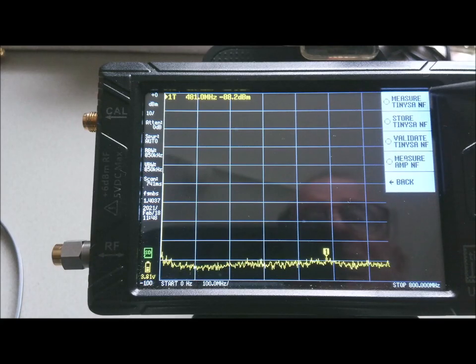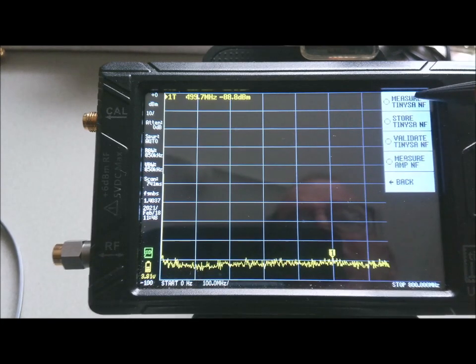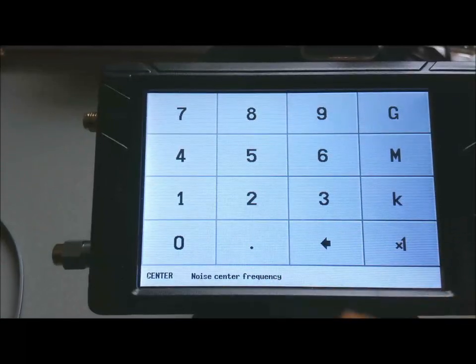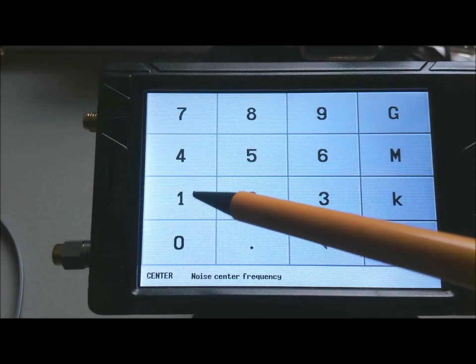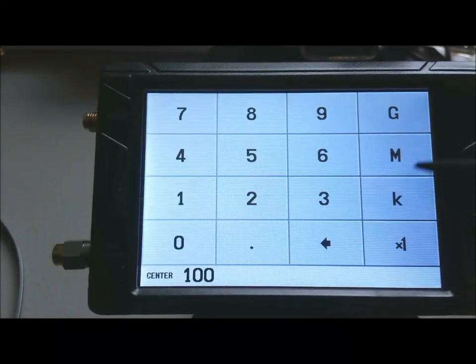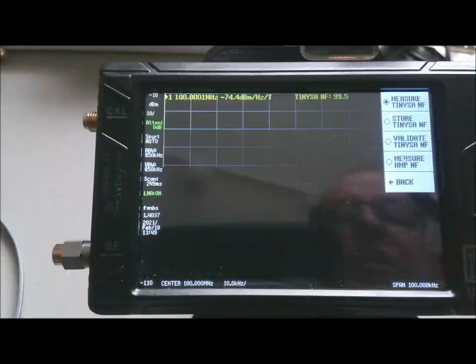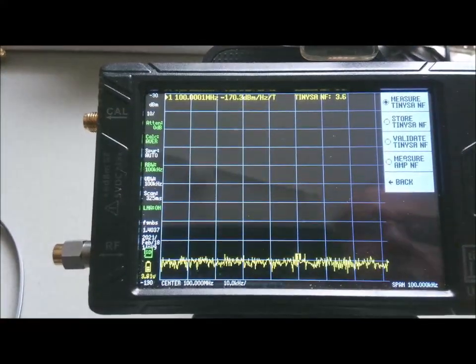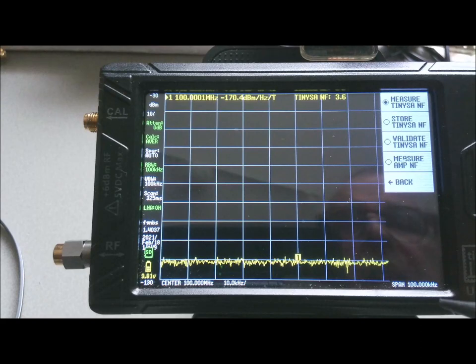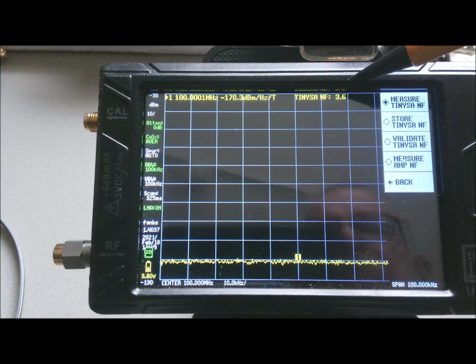So the first step is to activate the noise figure measurement of the TinySA itself. And there you have to specify for which frequency you want to do the measurement, and I'm specifying 100 megahertz. You see the TinySA moves to 100 megahertz and it starts to measure the noise figure of the TinySA. Here you see the number as measured on the top of the display.